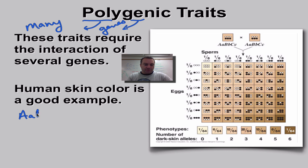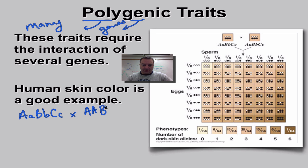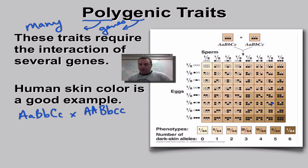Let's say we have an individual with a heterozygous genotype, so their skin color is medium. We're crossing that with an individual who is dominant for one gene, recessive for another, and heterozygous for the third — so that individual would be somewhere in the relatively dark range on the skin color scale.